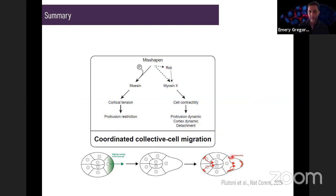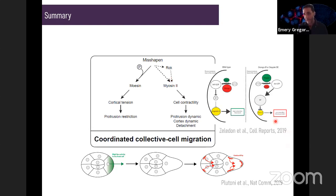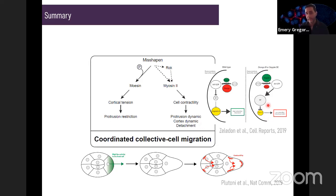A couple of things to finish. We don't yet know how misshapen regulates contractility, but interestingly, in a parallel story on Rho GTPase regulators, we found that a GEF for SteC needs to be maintained at low activity at the back of the cluster — if too high, it blocks detachment and contractility. The autolog of SteC in mammals is Citron kinase, which is a target of the autolog of misshapen, which is MAP4K4, so it could be that this mechanism is also playing a role in regulating contractility at the back through misshapen's function.